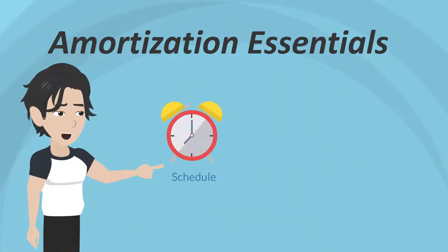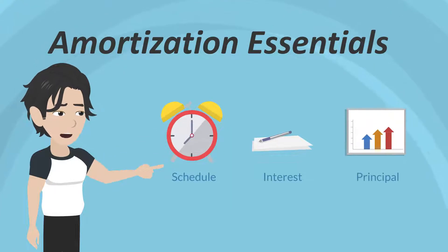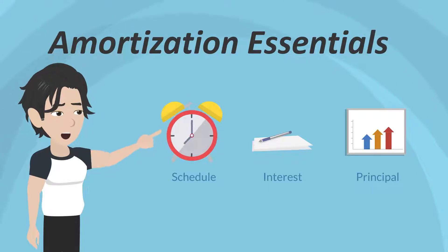The schedule is the amount of time needed to pay back the loan. The interest is the cost of borrowing that money, and the principal is the amount borrowed.